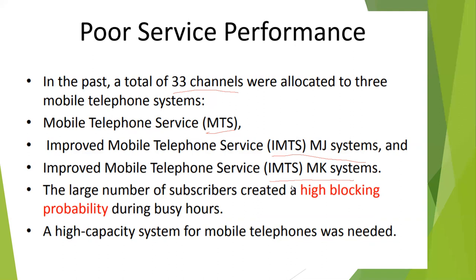Although service performance was undesirable, the demand was still great because there were no other systems available. Even with very low service performance and many subscribers on a blocking list, people used these systems because of the great demand. The large number of subscribers created a high blocking probability — in working hours, more calls are generated but available users and channels are limited, so a high-capacity system for mobile telephones was needed.